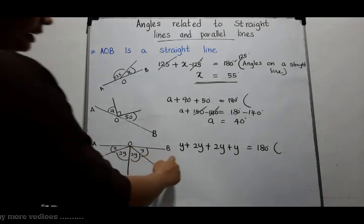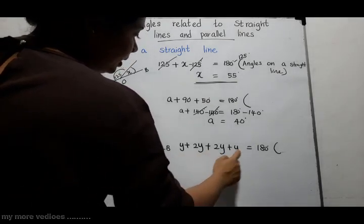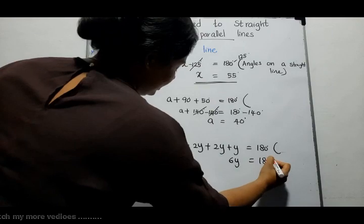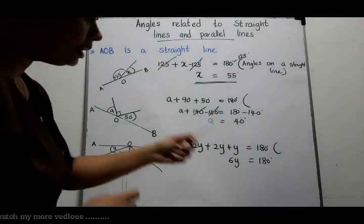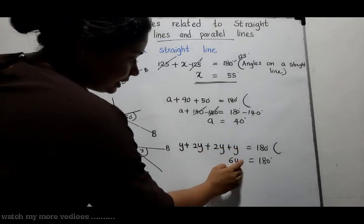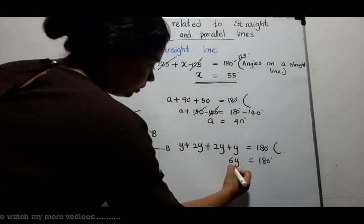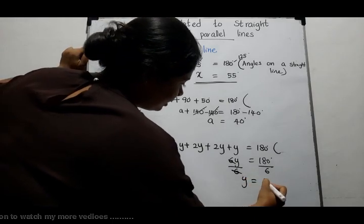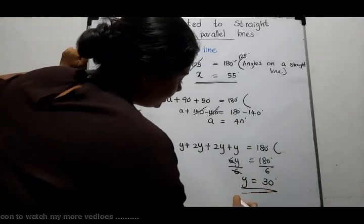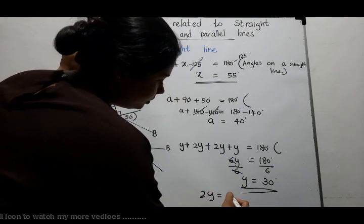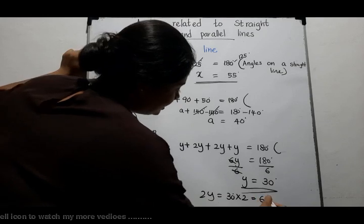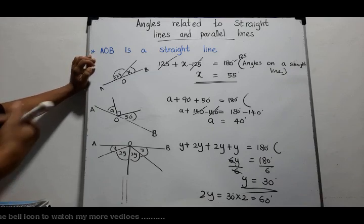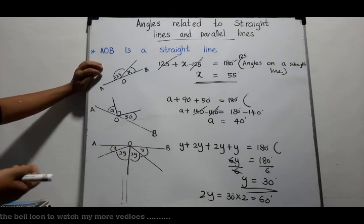Let's build the equation: Y plus 2Y plus 2Y plus Y equals 180 degrees. Reason: angles on a straight line. They are like terms, so we add: 6Y equals 180 degrees. Dividing both sides by 6, Y equals 30 degrees. To find 2Y, we multiply 30 degrees by 2, giving 60 degrees. These three examples show how to solve problems related to straight lines.